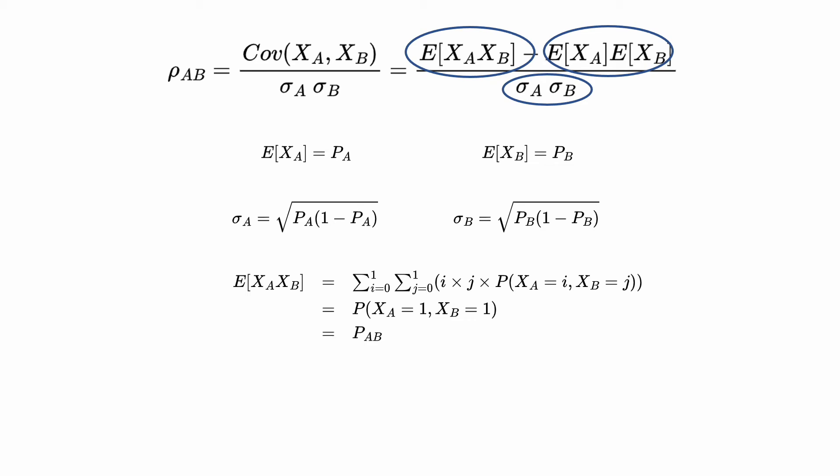Since when at least one survives, the product is just 0, we are left with the probability when both default, which is our joint default probability. Convenient, right? Plug everything in and rearrange the terms. We can write down the joint default probability as a function of the correlation and the individual company's default probability.